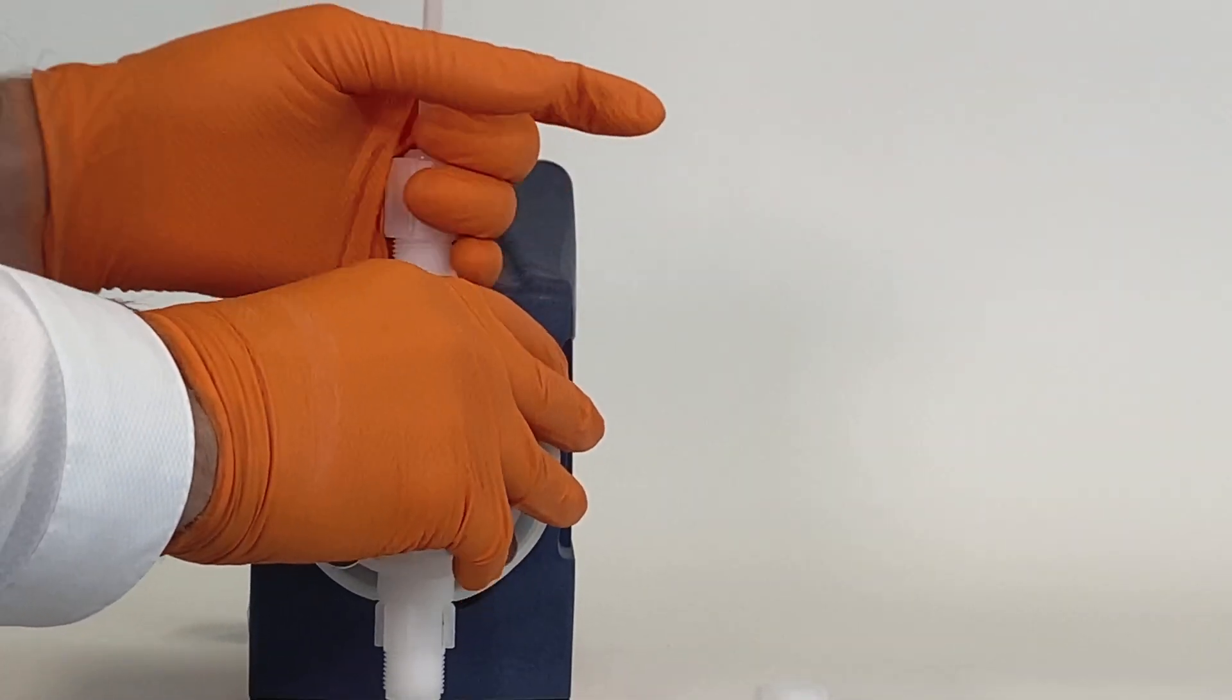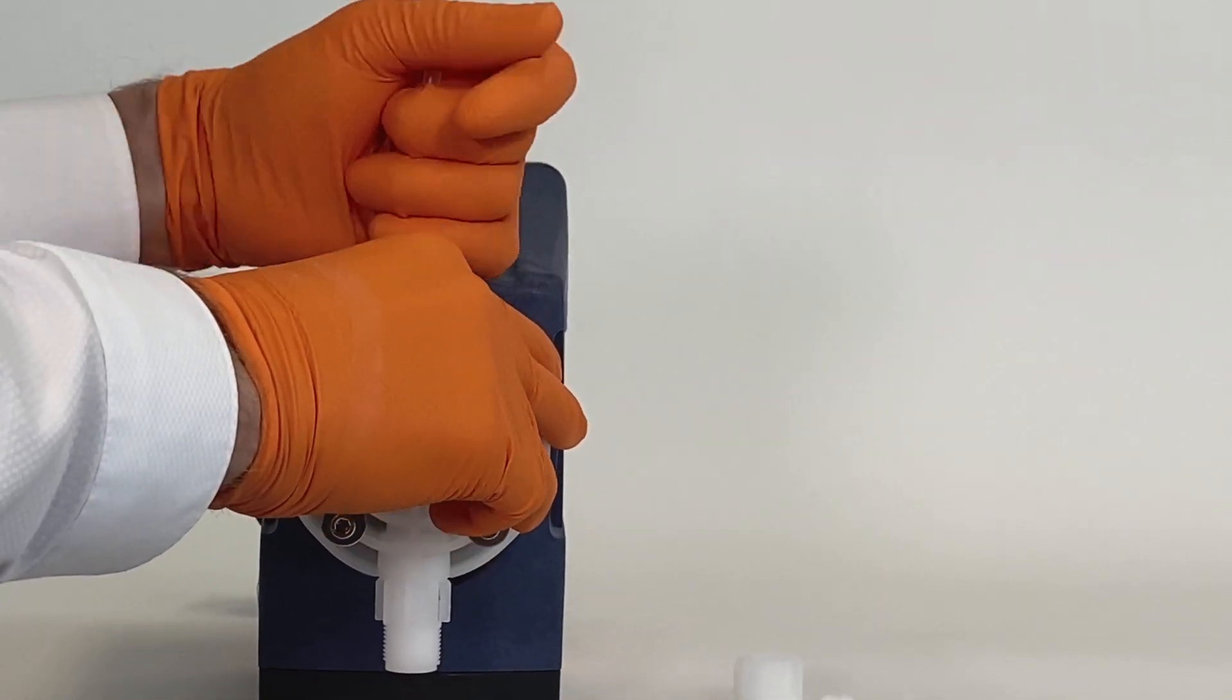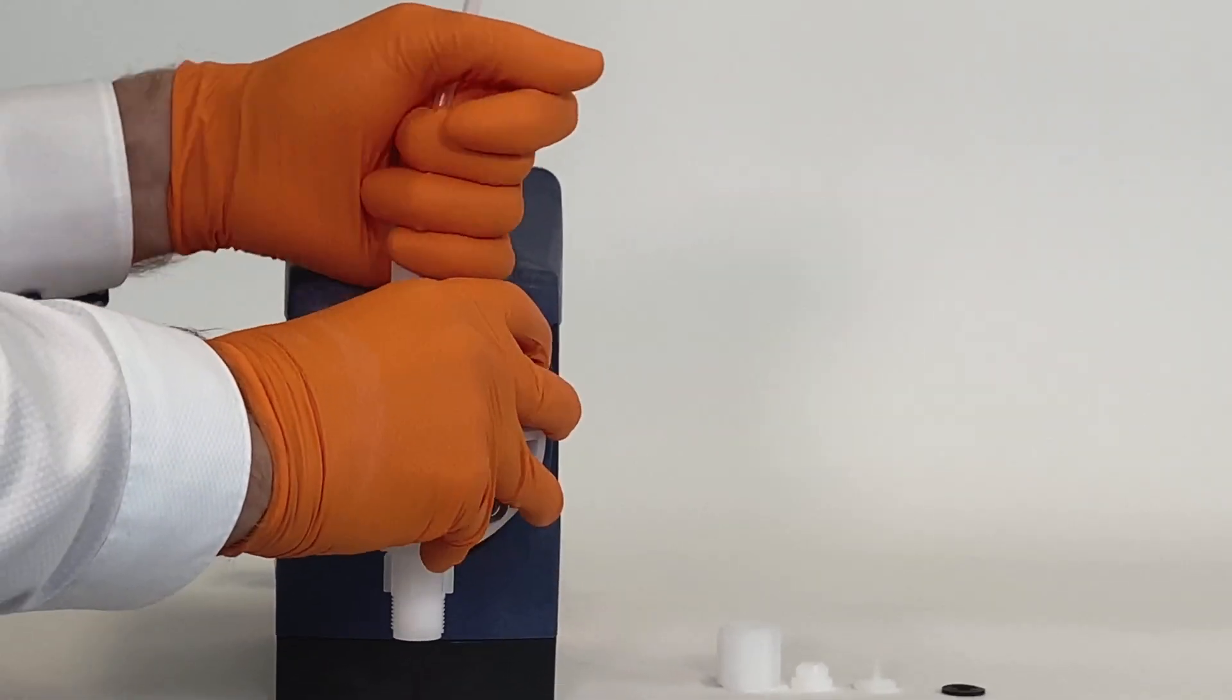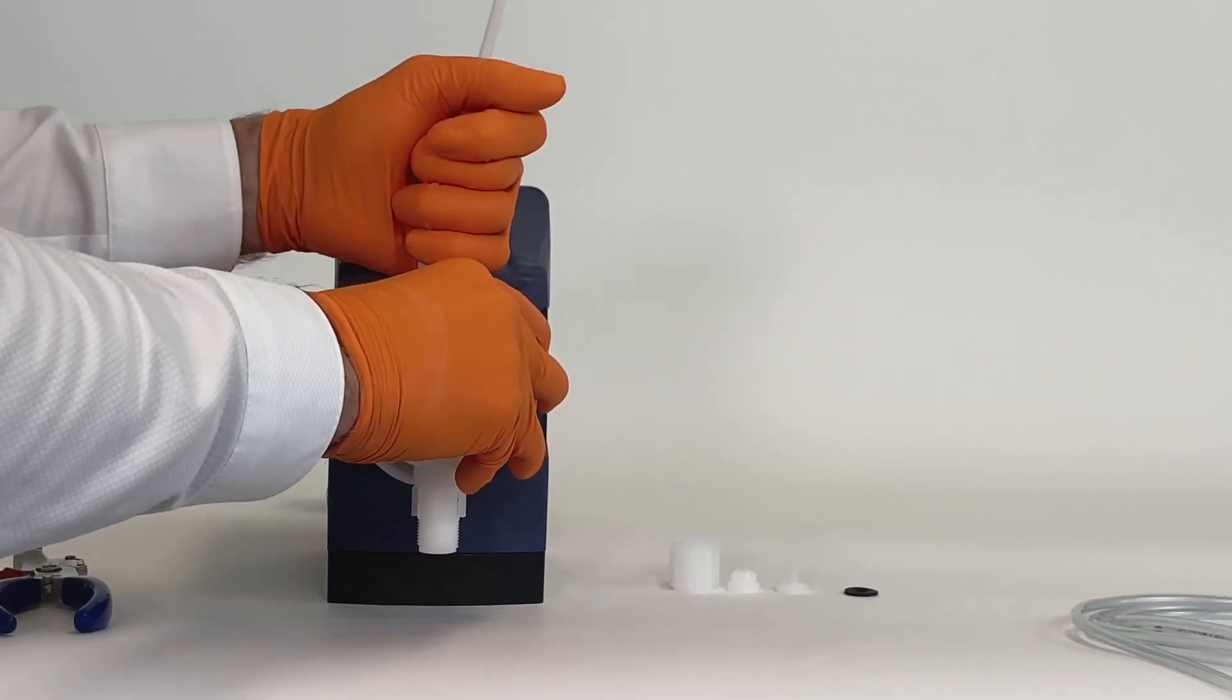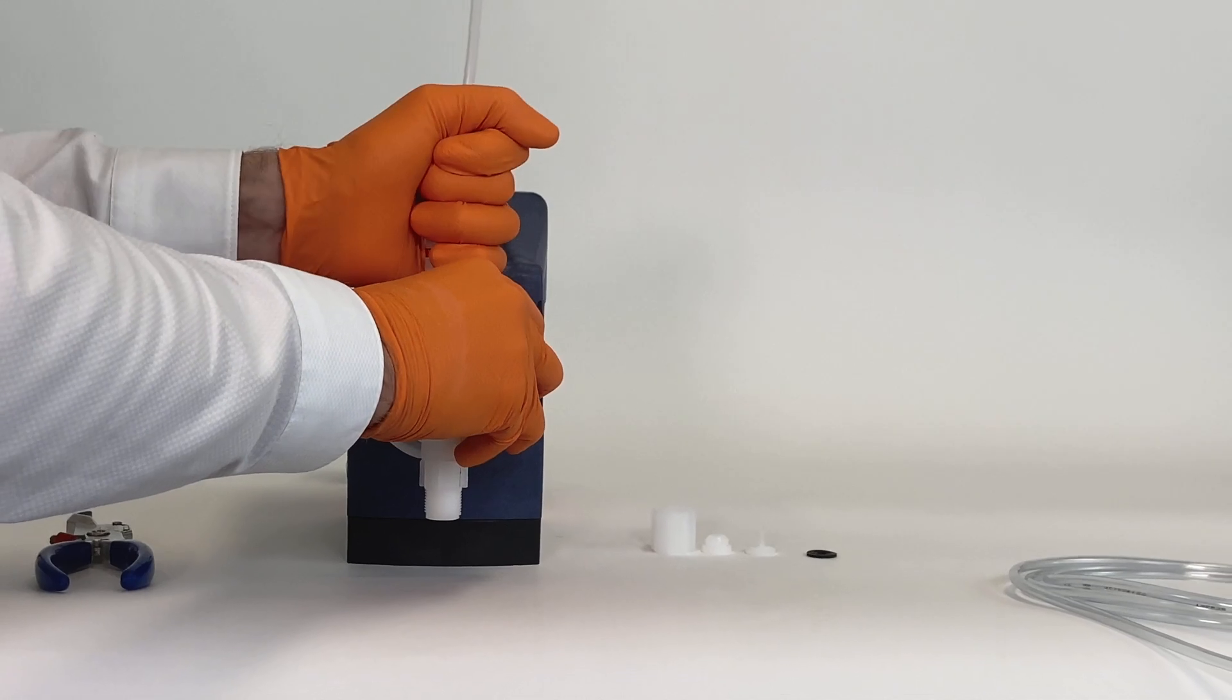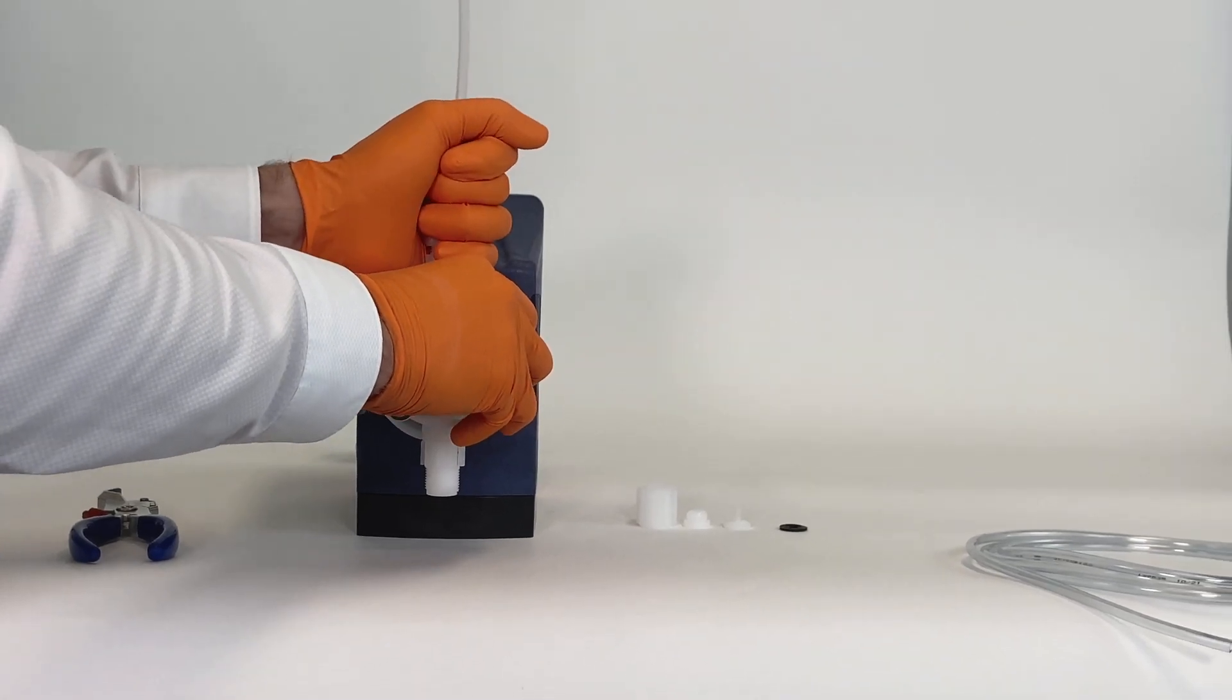After priming the pump and letting it run for a couple of minutes, check the tightness and eventually retighten the union nut if needed. That's it.